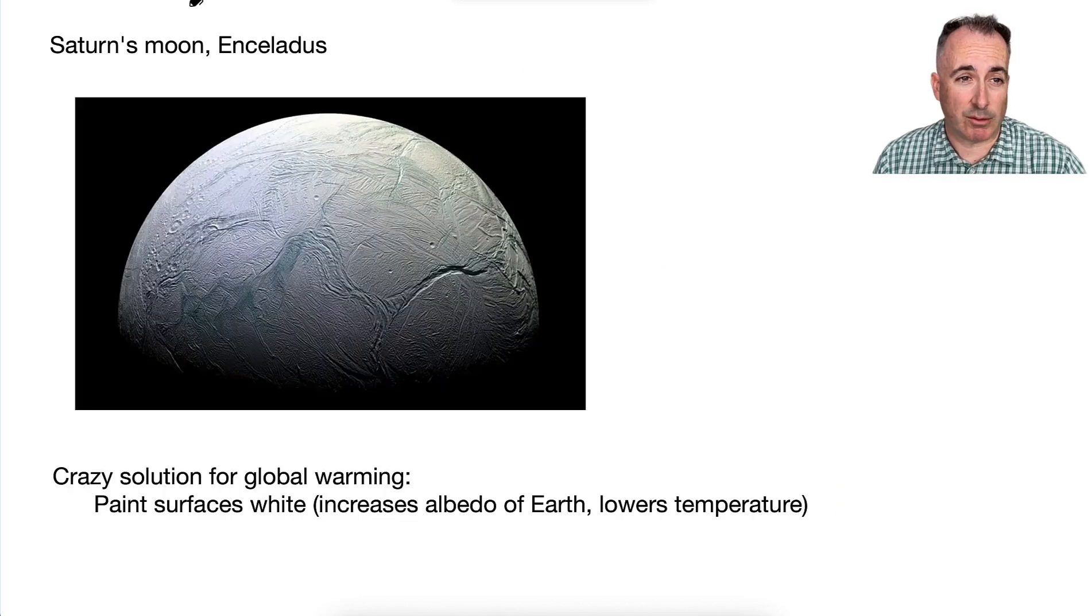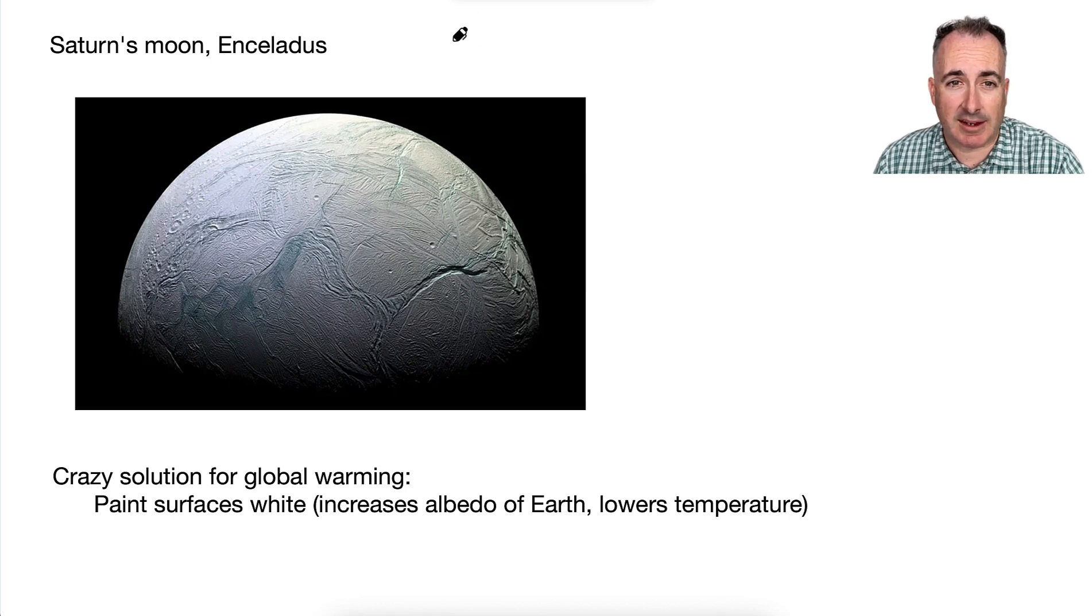So one example using albedo will be Saturn's moon called Enceladus. That has an albedo that's super high. It's around 0.99. Remember what that means? That means that it's almost perfectly reflective. Well, it turns out, before they got to take this picture and see that it was made of ice...